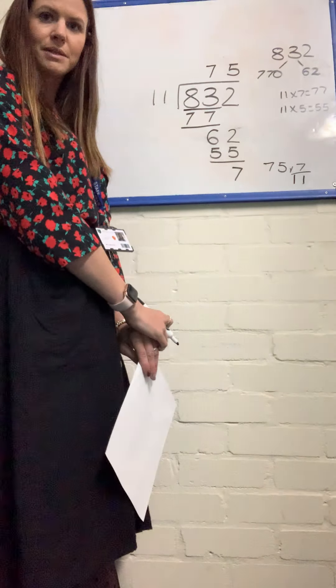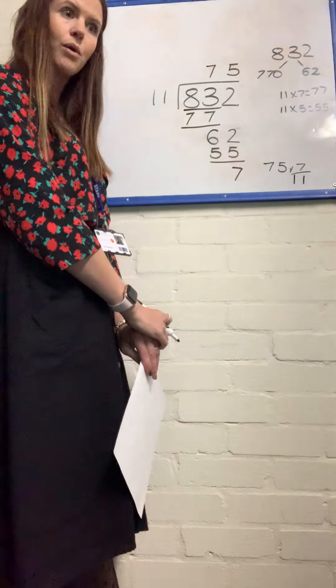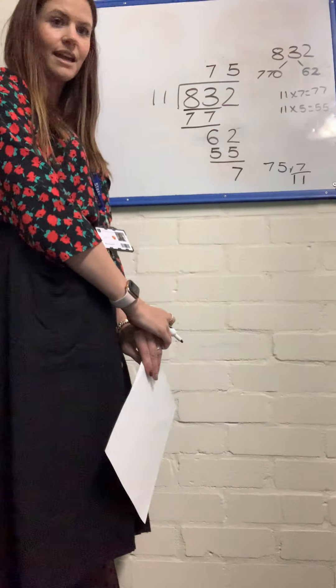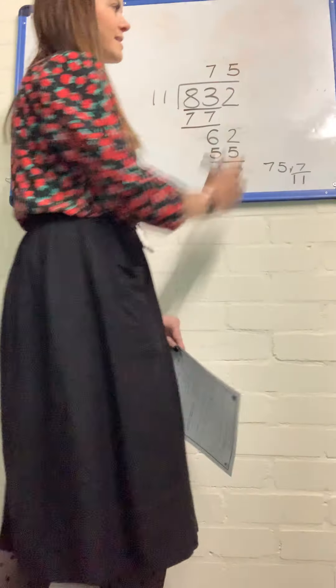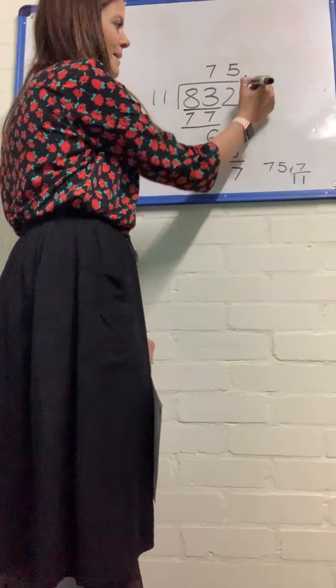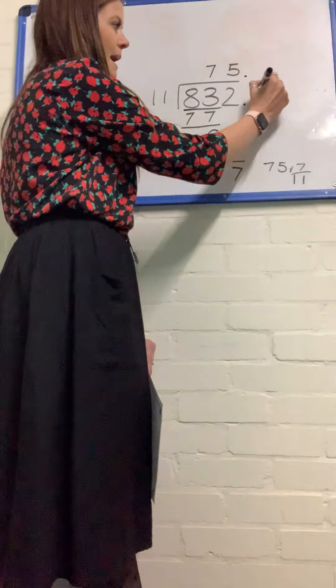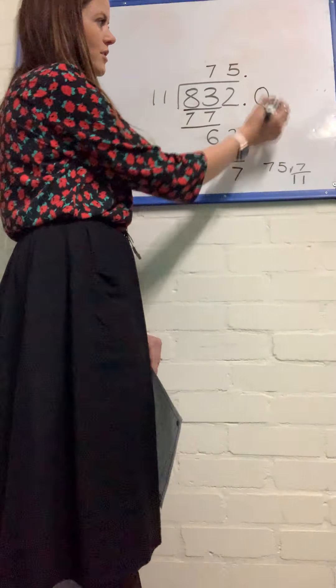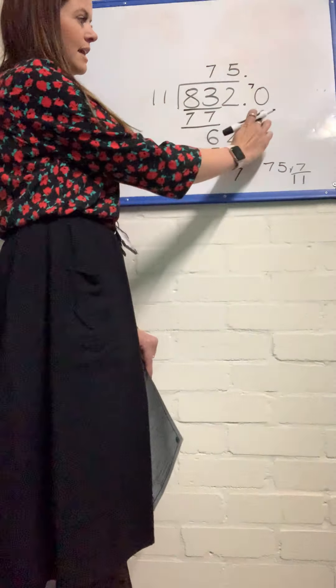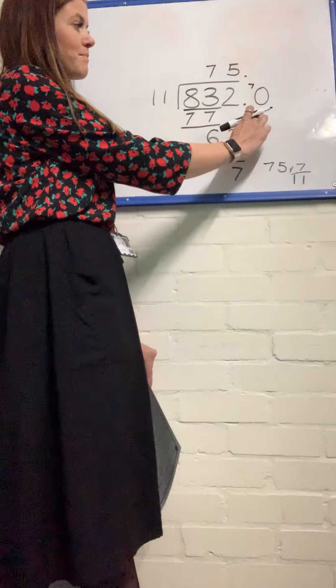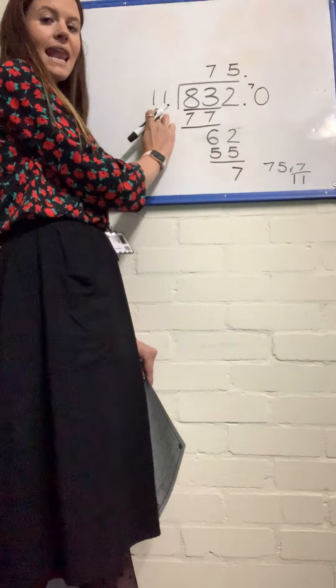7 11ths isn't something that we'll be able to convert to a decimal as quickly as when it was 3 6ths. So we need to look at the same technique as what we used the second time. So I'm going to put my decimal point here and my 0. And my 7 remainder now becomes my 70 tenths in this first column here. And I'm dividing this by 11.